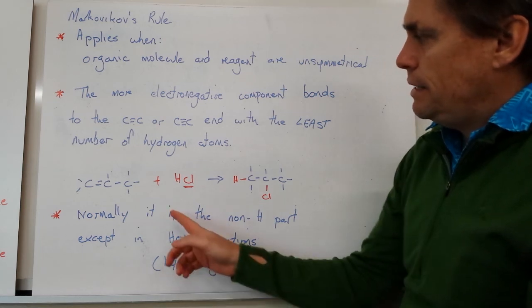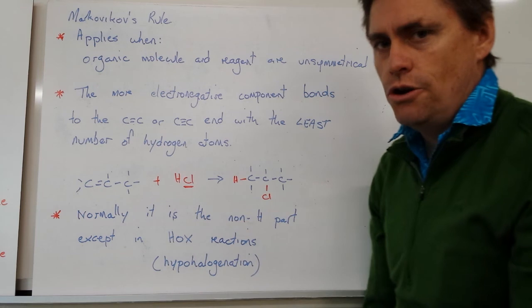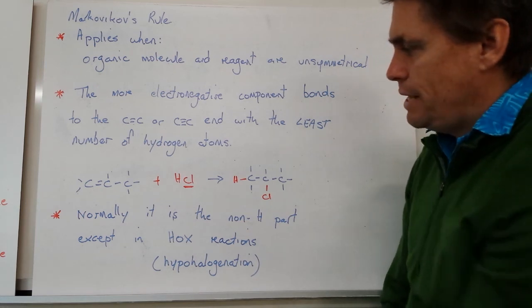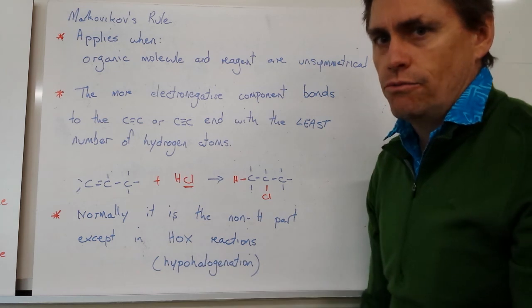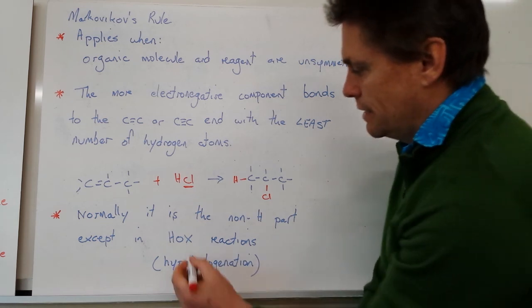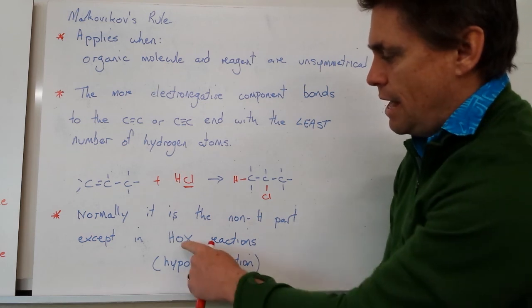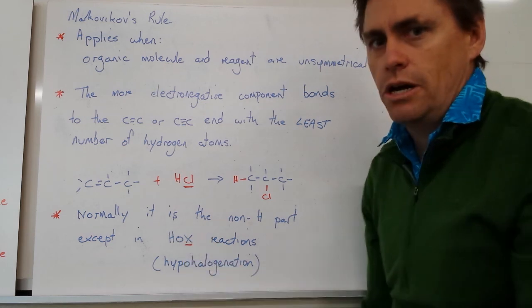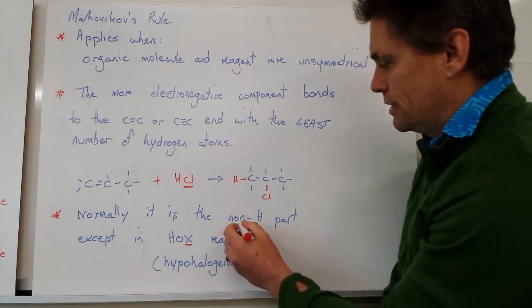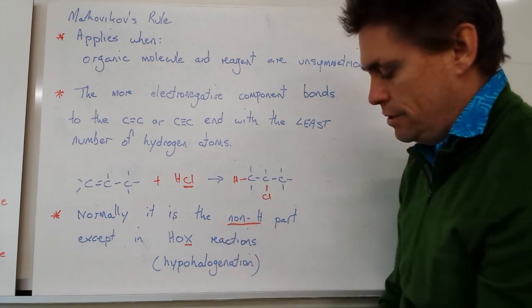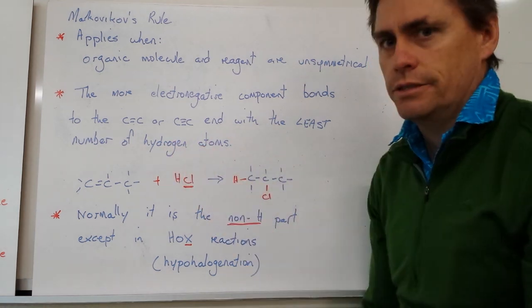The electronegative component is normally the non-H group, unless we have halohydrin reactions, in which case the halogen will be the electronegative component and the hydroxide will be the positive component. But for all other reactions, the non-H component will go to the carbon with the least number of hydrogens.